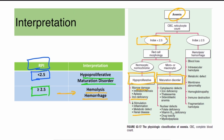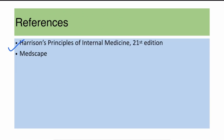If the reticulocyte production index is more than 2.5, it suggests the bone marrow is working hard to compensate, producing many reticulocytes in response to hemolysis or hemorrhage. This can occur in various situations including blood loss, intravascular hemolysis, membrane abnormalities, or immune destruction. These are the references used in preparing this video.